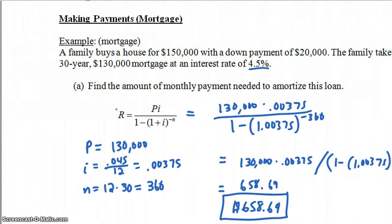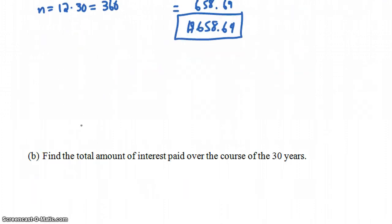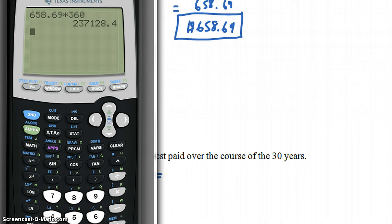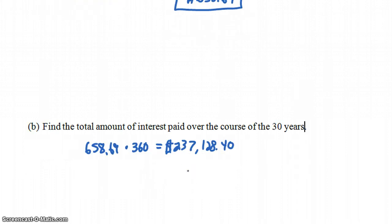Another question you could ask is: how much did you pay in interest overall over the course of those 30 years? That's what part B asks — find the total amount of interest paid over 30 years. You're paying $658.69 a month for 360 months, so multiply this by 360 and you get $237,128.40. That's the total amount paid toward the house. Now, not all of that was interest — $130,000 of that went toward your principal, so subtract $130,000 to find the total interest paid.